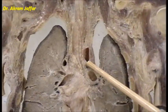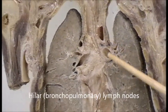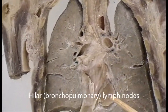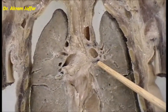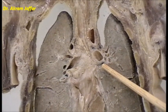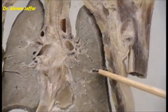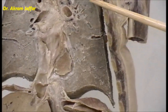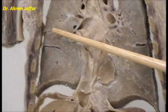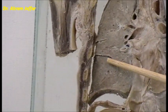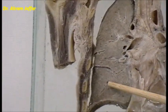In the hilum of the lung, you may notice these black structures. These are lymph nodes — the hilar lymph nodes, the bronchopulmonary lymph nodes. They become black because of the content of carbon particles that have been ingested by the macrophages. Again, in the left lung you notice that there is a single fissure, that is the oblique fissure, separating the upper lobe from the lower lobe. In the right lung there are two fissures — the horizontal fissure and the oblique fissure — and these separate the upper lobe, middle lobe, and lower lobe of the right lung.